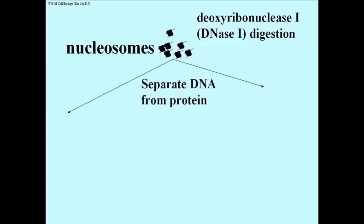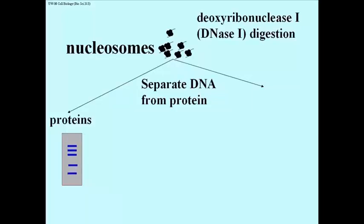Now we're going to analyze the protein. Let's look at the proteins that you get out of the nucleosome. You take the proteins, throw away the DNA, and run the proteins on a gel. The proteins separate, and it turns out that the 10 nm filament is really just made up of DNA and 5 proteins.